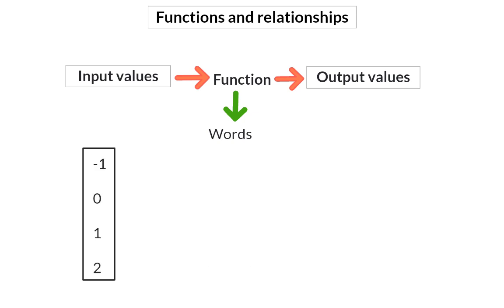Here we now have four input values: minus one, zero, one, and two. The function is described in words as multiply by three and add two.